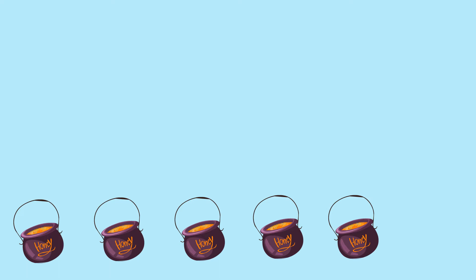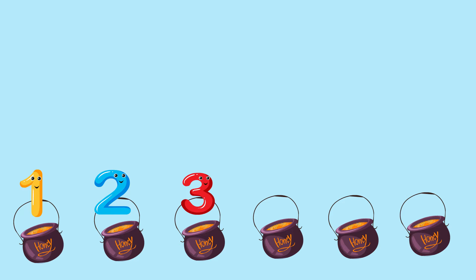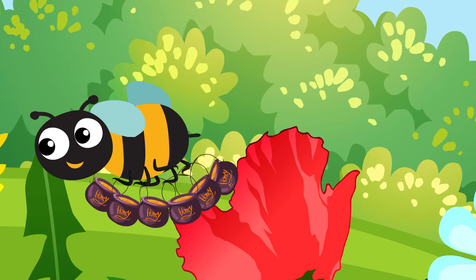1, 2, 3, 4, 5, 6. 1, 2, 3, 4, 5, 6. Now the bee has six buckets of honey.